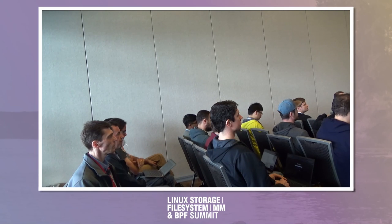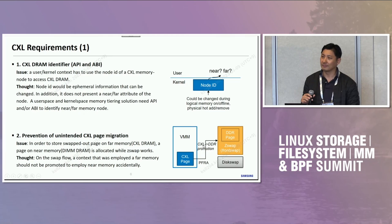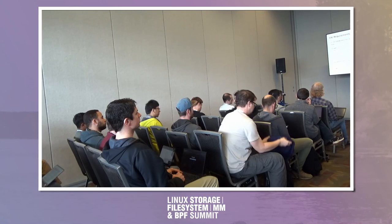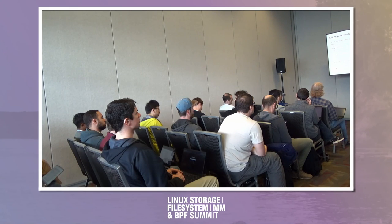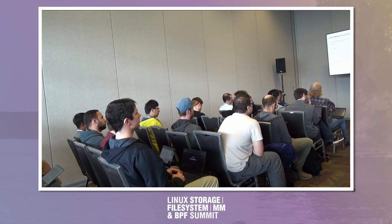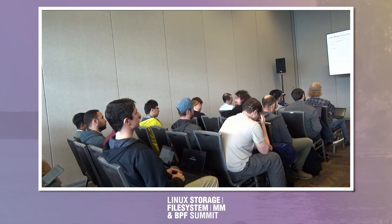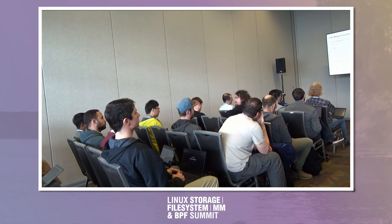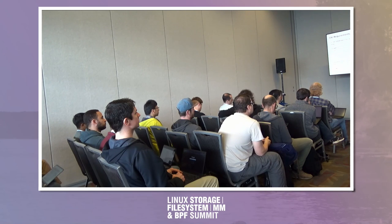I guess what Matthew is trying to say is that you can control your memory placement using NUMA APIs to explicitly put some memory on a remote node. But the concern is that you have memory pressure on that node, the memory gets swapped out, but it goes to the front swap, which from that point of view is a closer memory. So essentially you are moving memory from a distant node to a closer node while it's not being used — essentially an inversion of hotness with respect to close memory. Is that correct? Yeah, I think so.